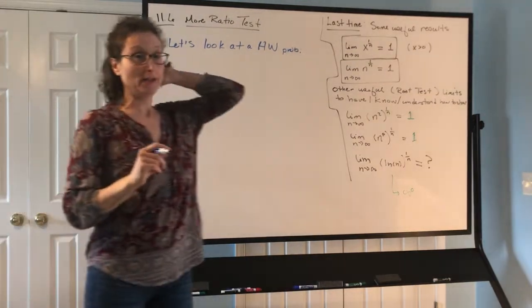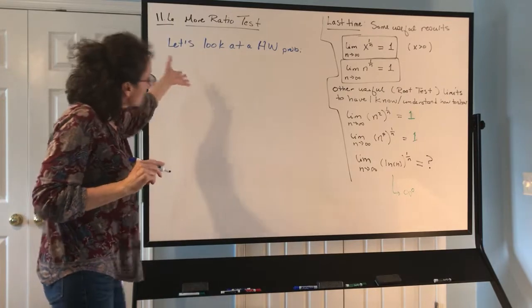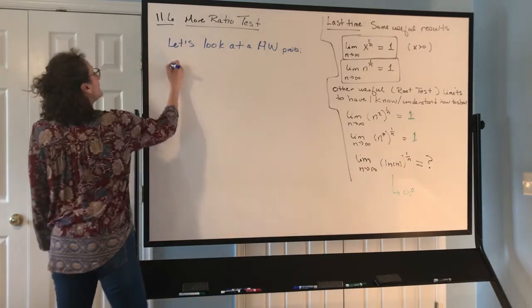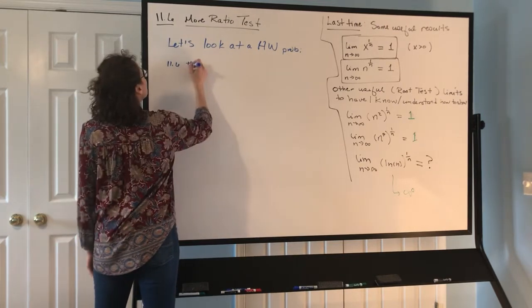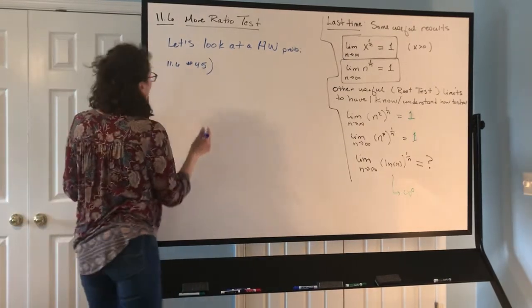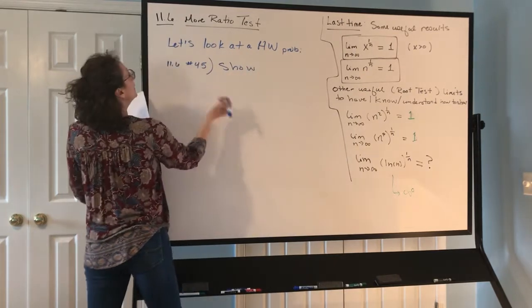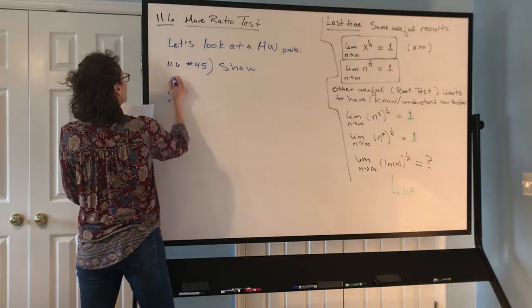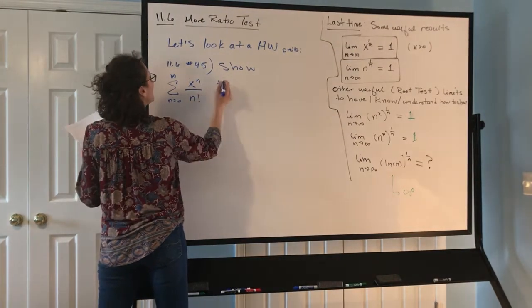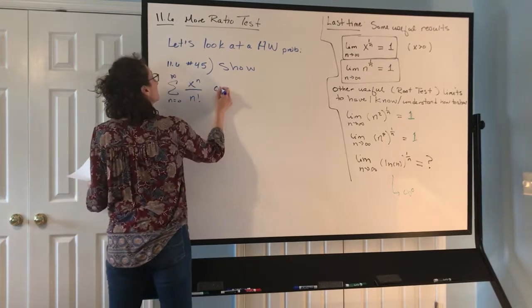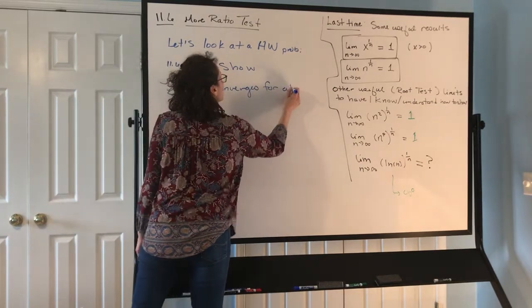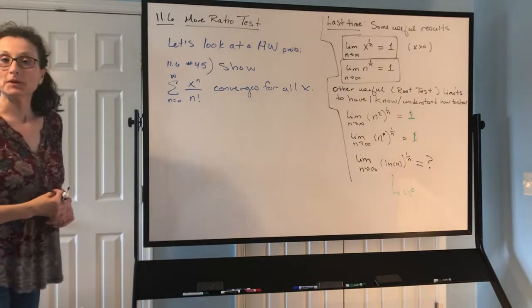Let's look at homework problem 11.6 number 45. Hopefully you've already thought about this a little bit. It's a really important problem — there's a lot buried in here, and not all of it will be unpacked today. Number 45 says to show that the sum from n equals 0 to infinity of x to the n over n factorial converges for all x.